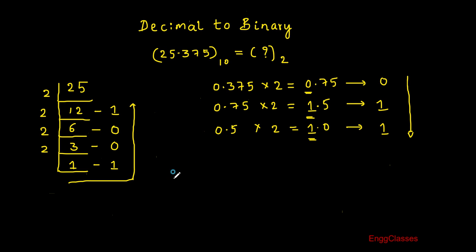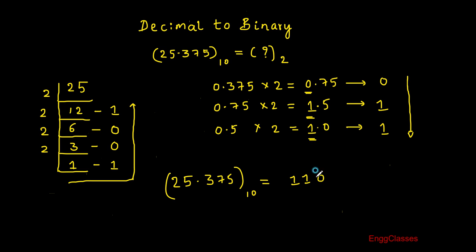So ultimately the answer is: the given decimal number 25.375 has an integer part in binary of 1 1 0 0 1 and a fractional part of 0 1 1, giving 11001.011 in binary. In this video lecture I have considered a conversion from decimal to binary step by step. I hope you have understood. If there are any doubts please let me know in the comment section and I am happy to answer those doubts. Thank you so much for watching.